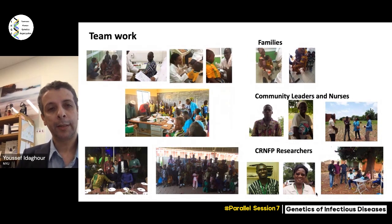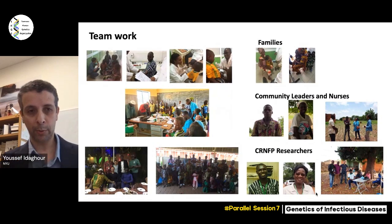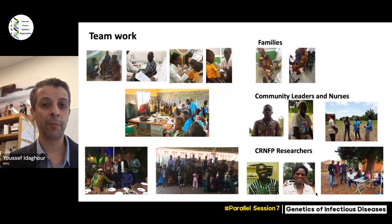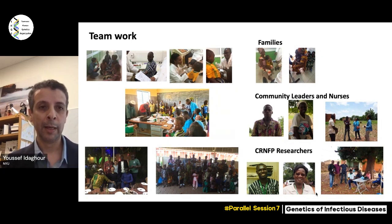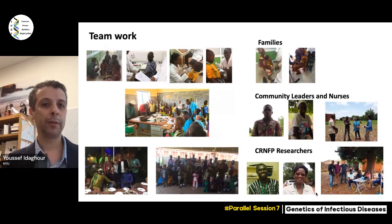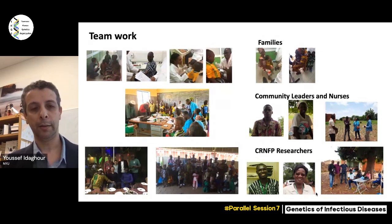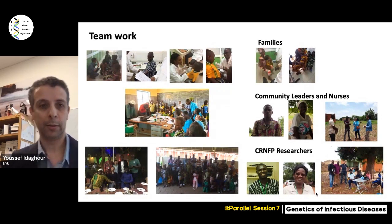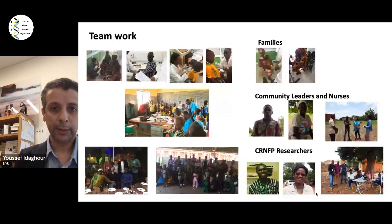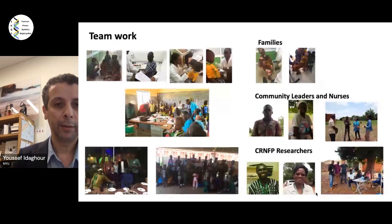We recruited a small cohort of 150 children from the Guan ethnic group in the Bamfora region of Burkina Faso, focusing completely on in vivo phenotypes. The idea was to sample children over time — before infection, during infection, and after infection — over two or three years. This really requires a lot of collaboration from local community leaders, nurses, and a wonderful team of young African scientists who are part of Isiaka's team.